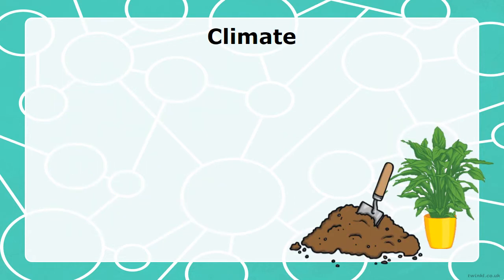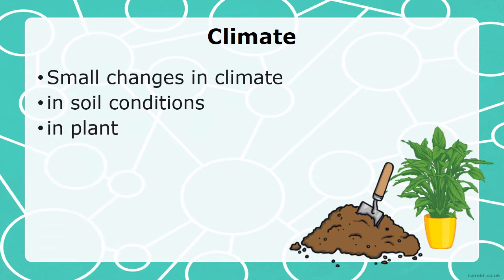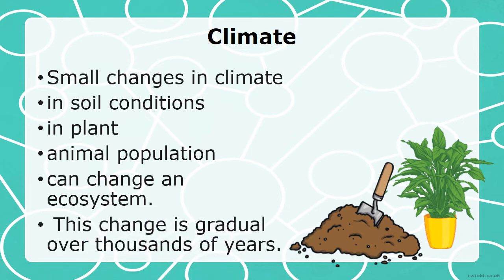Let's look at how climate can affect the environment. Small changes in climate can change our soil conditions, change our plants, change our animal population, and can change our ecosystems totally. These changes are gradual, occurring over thousands of years.